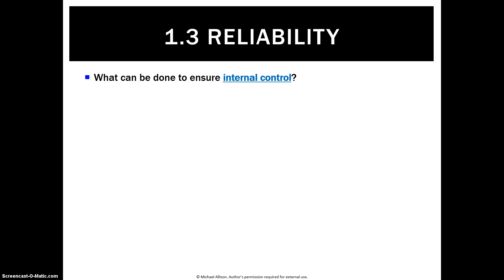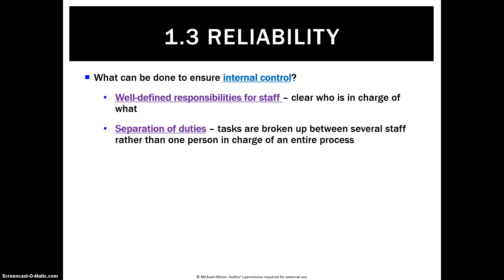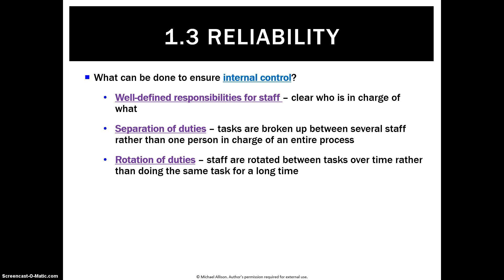So let's look at some specific things we can do to improve internal control. We want to have well-defined responsibilities for staff that make it very clear who's in charge of what. We want to separate duties — make sure tasks are broken up between several staff. We don't want one person doing absolutely everything in an entire process because then there's nobody to monitor what they're doing. We also want to rotate duties: if someone has always been the orderer, after a year we rotate them, so a new person can come in and establish pretty quickly whether the old person has been committing any theft or fraud.